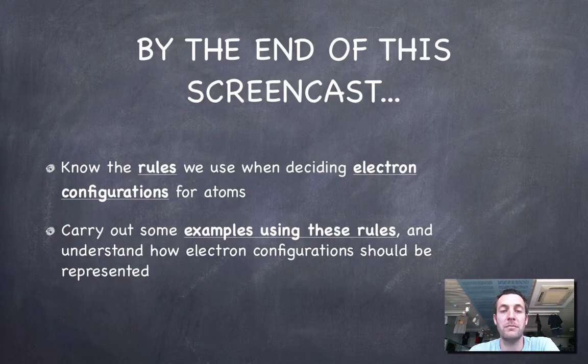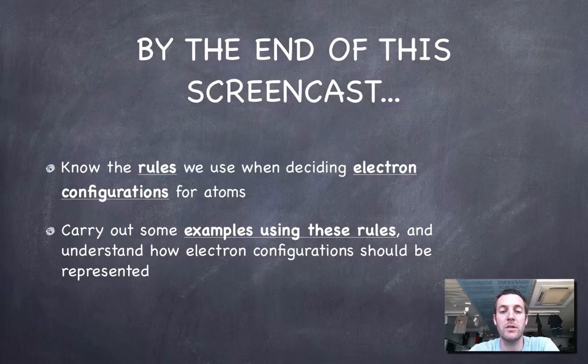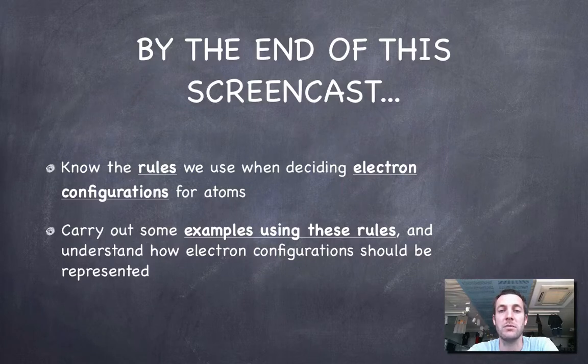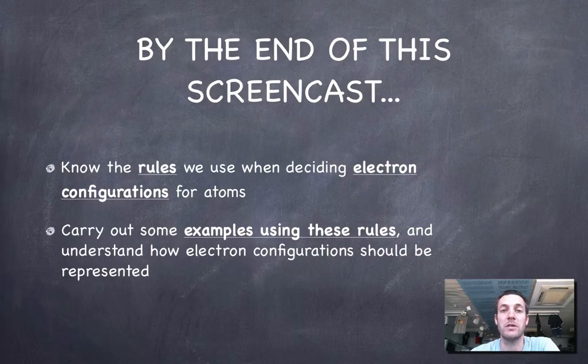Hopefully by the end of this film you'll know the rules that we use when deciding electron configurations for atoms, and you'll be able to carry out some simple examples using these rules and understand how electron configurations can be represented.